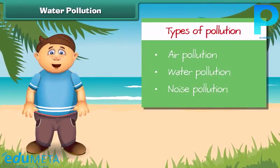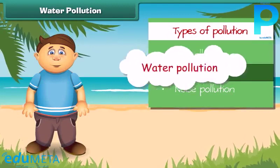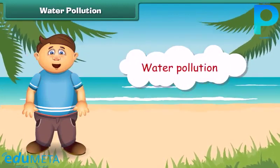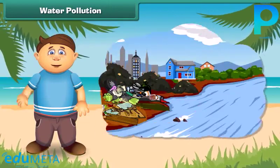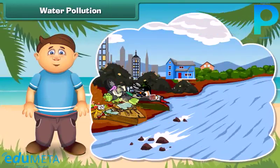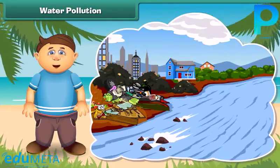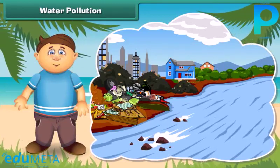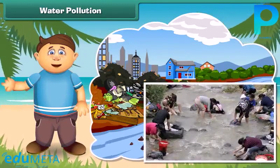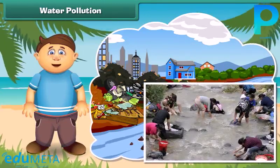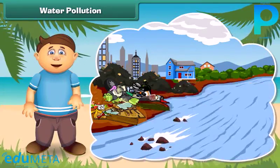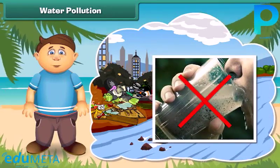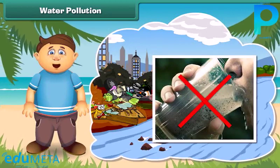Now let's know about water pollution. Like air, water also gets polluted. Look at this river — it is very dirty. It receives sewage from homes and waste from factories. Some people also wash their clothes and throw waste into it. We should not drink this water as it contains germs and may result in diseases.